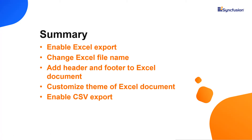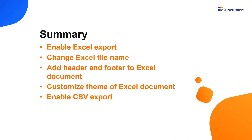Here's a quick recap of what we have seen. I showed you how to perform Excel and CSV exporting in the Blazor TreeGrid component. I also showed you how to customize the file name, theme, header, and footer for the exported Excel document. You can download a working example from the GitHub link in the description below. You can also check if you're eligible for our community license, which provides a free license key to use our products. If you found this video useful, give it a like and subscribe to our channel.